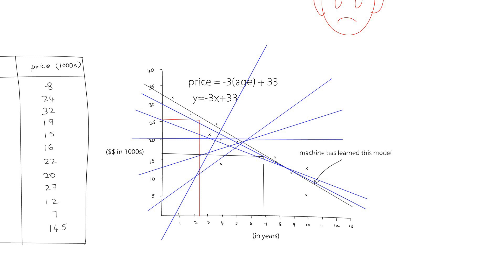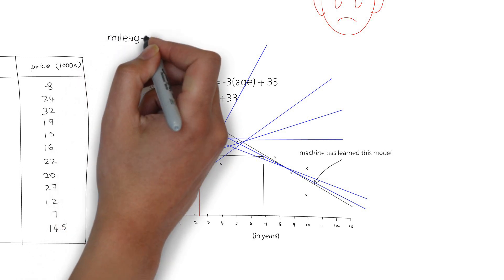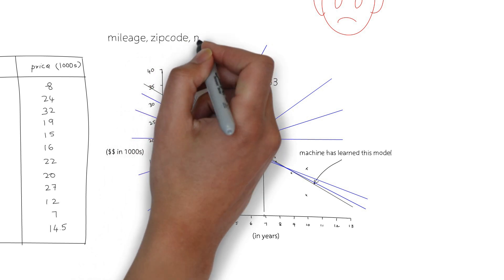Now, the same principle can be extended to add more dimensions to the data, such as the car mileage, zip code, car model, and so on.